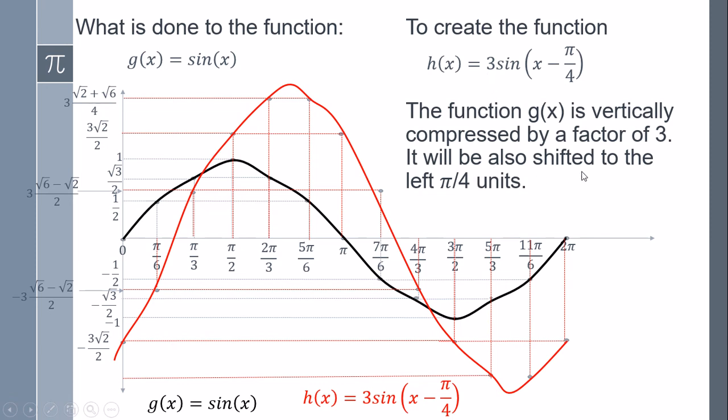And it will also be shifted to the left pi over 4 units. So the answer is: the function g of x is vertically compressed by a factor of 3 and shifted to the left pi over 4 units. That's all — I hope it has worked for you. Great success with mathematics, and see you in the next video. Bye-bye.